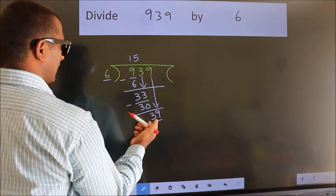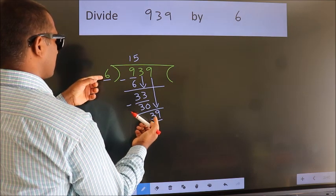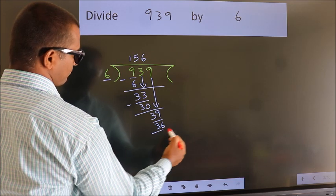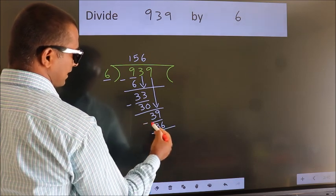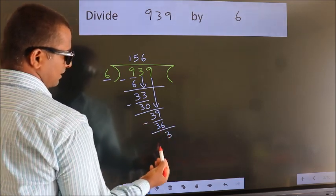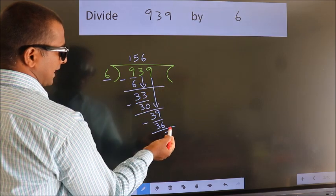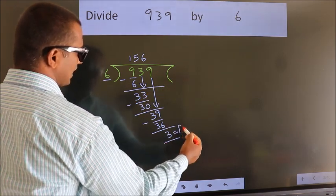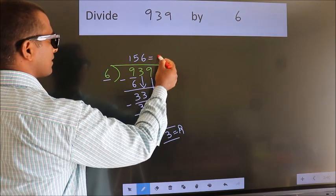A number close to 39 in the 6 table is 6 times 6 equals 36. Now we subtract. We get 3. No more numbers to bring down, so we stop here. This is our remainder. This is our quotient.